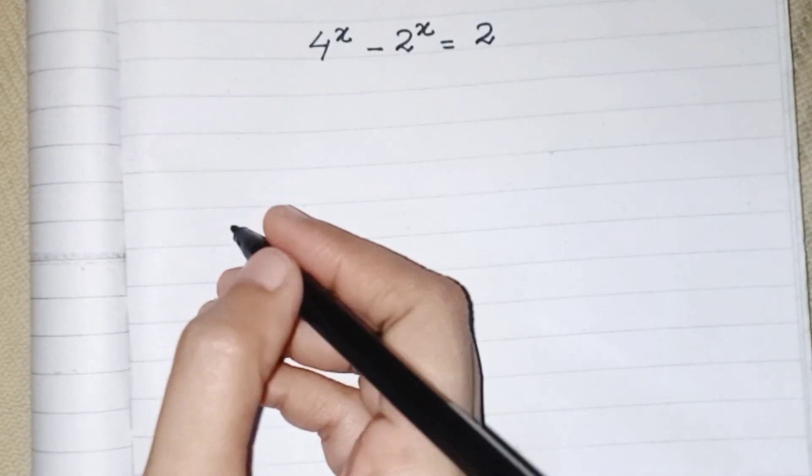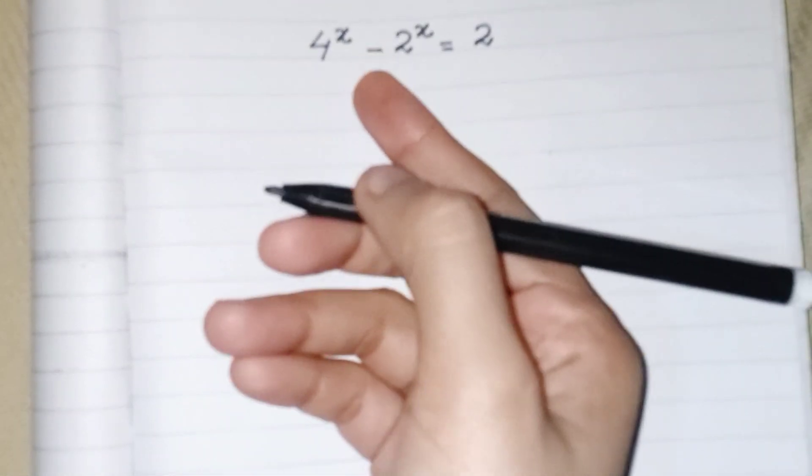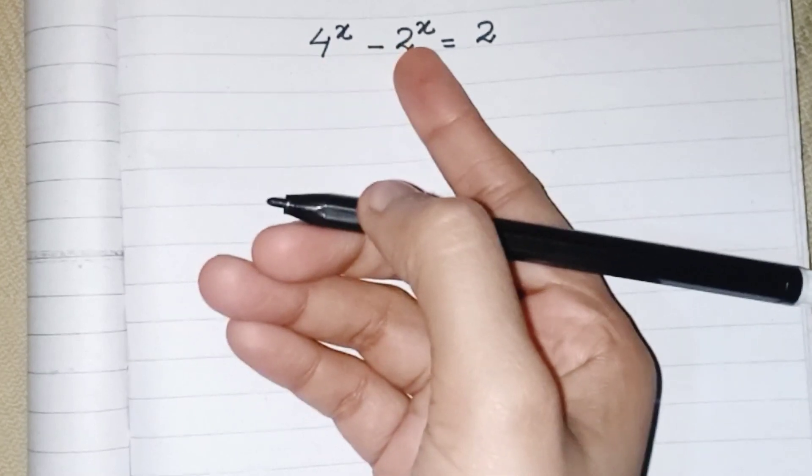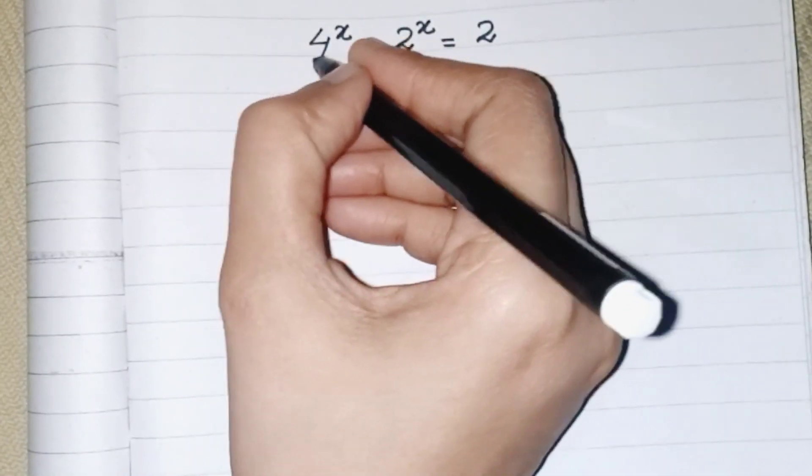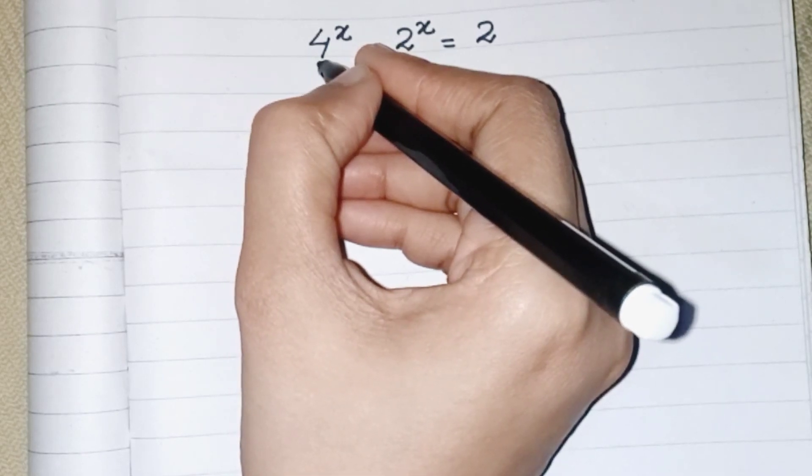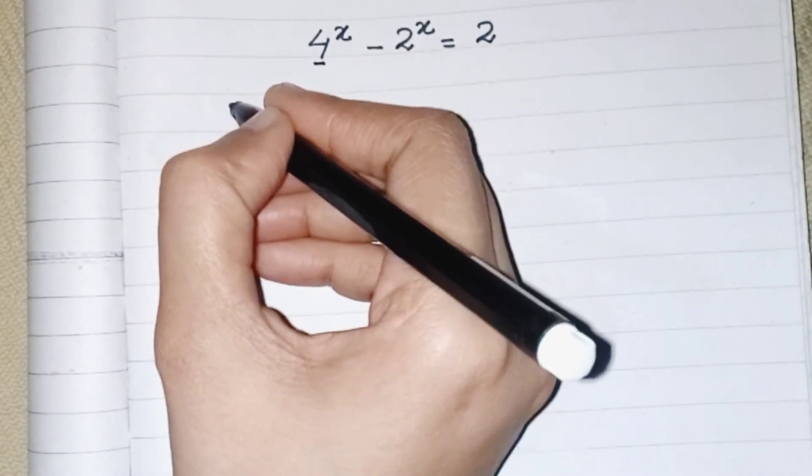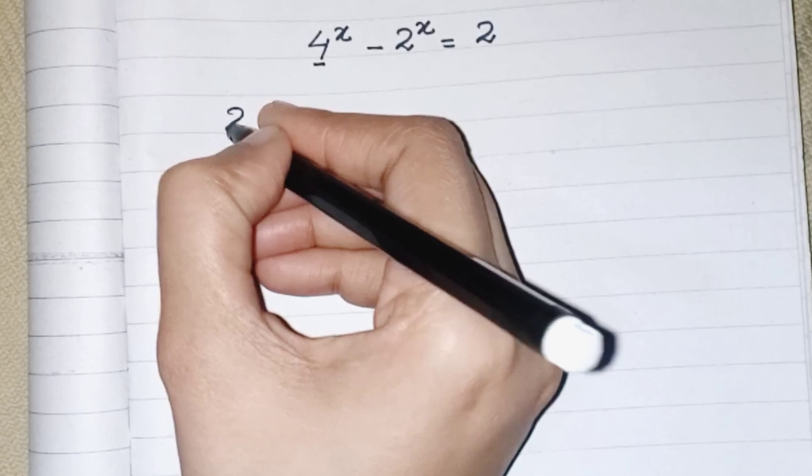Hello everyone, I am here to solve this amazing exponential equation to get the value of x. What we can do at first step, we have to convert this 4 into its exponential form, so we can write it like 2^2.